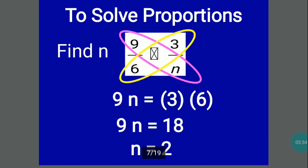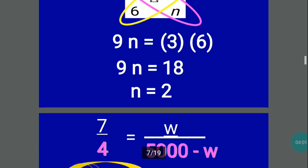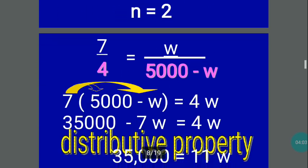Now let us proceed to solving proportions. Find n: if you have 9 over 6 is equal to 3 over n, then you cross multiply. You have 9 times n, and 3 times 6. So 9n is equal to 18. Therefore n is equal to 2.